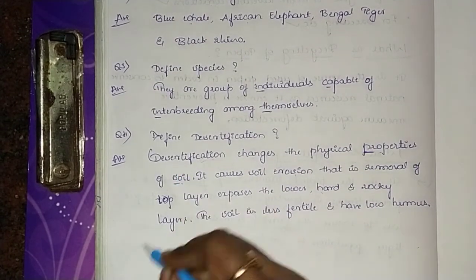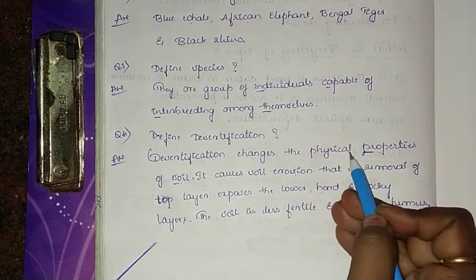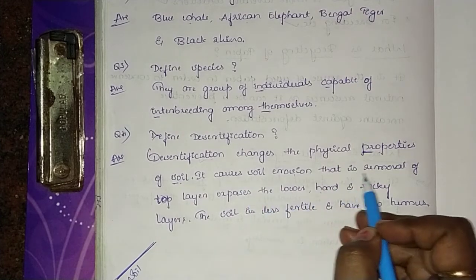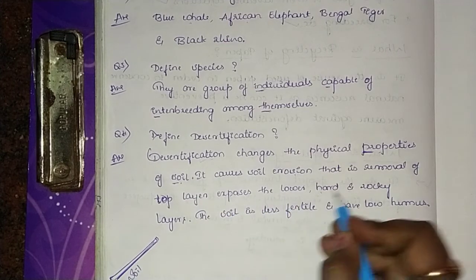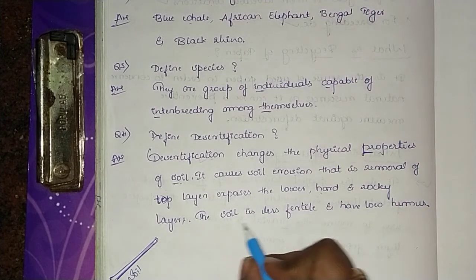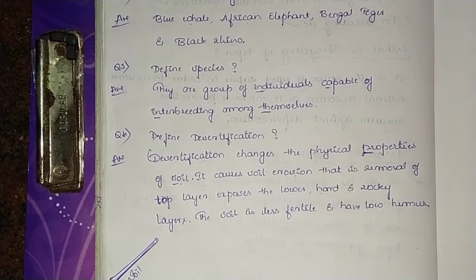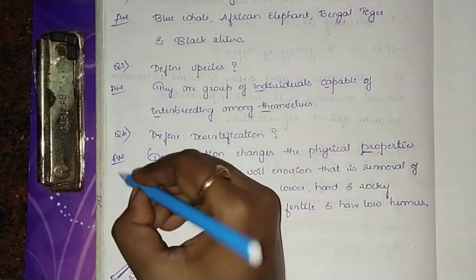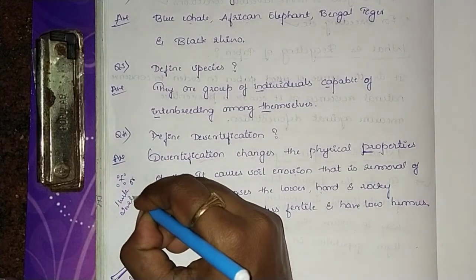For example, this is our first layer of soil. Desertification changes its physical properties, causing soil erosion and removal of the top layer, exposing the lower hard and rocky layers. The soil becomes less fertile and has low humus. This is desertification, and it is an important question — very important for examination.